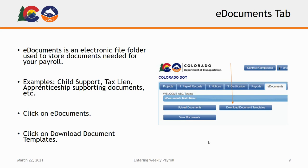Once you have set up the items in the Setup tab, you're ready to load your required documents into the e-documents tab. The e-documents tab is an electronic file folder used to store any documents that are needed for your payroll. Examples of documents you would store include child support garnishments, tax liens, apprenticeship supporting documents, and so on.